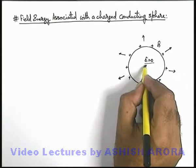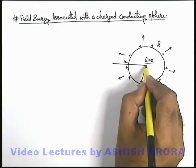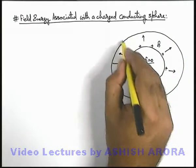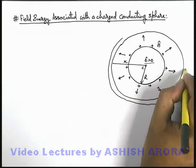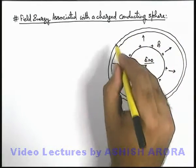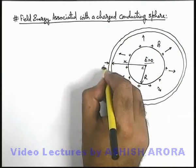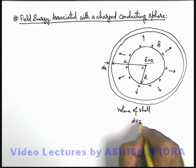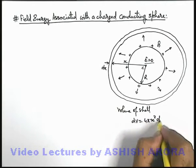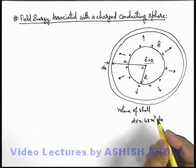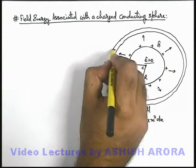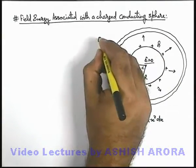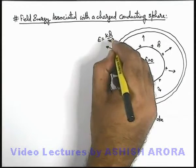To calculate the field energy, we consider at a distance x from its center an elemental spherical shell of width dx in the surrounding of this sphere. The volume of this elemental shell can be written as 4πx²dx, that is the surface area of the shell multiplied by the width. The electric field within the region of this shell can be considered uniform because dx is very small, and the magnitude of electric field is kq/x².